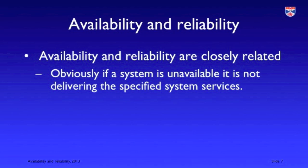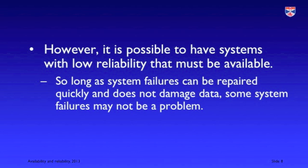It's obviously the case that availability and reliability are related. If a system is not available it's obviously not delivering its services correctly. But it's usually helpful to think of these separately. It's actually possible to have a system with high availability requirements but low reliability requirements, so that it may frequently fail. This is possible if the failures are not damaging and it's possible to recover from them quickly. For example, if a request for service is made, the system fails, the failure is detected and corrected, the requester of that service may never know that a failure has occurred.